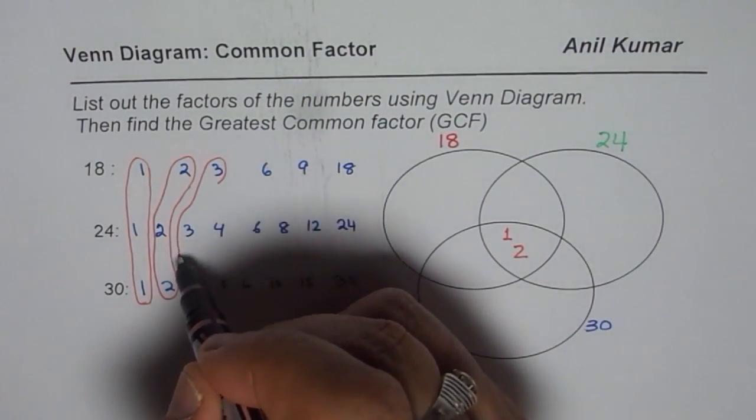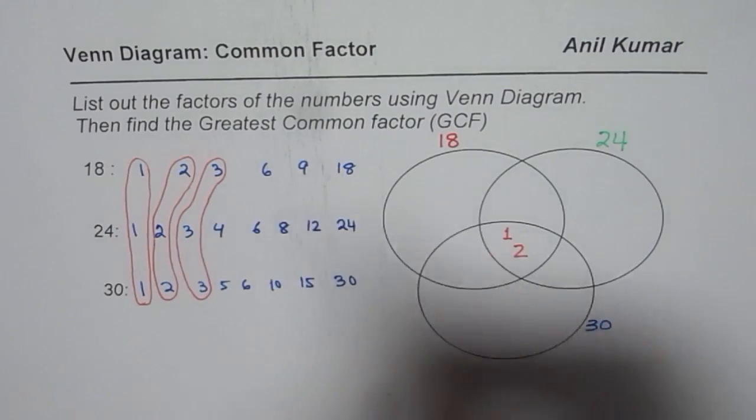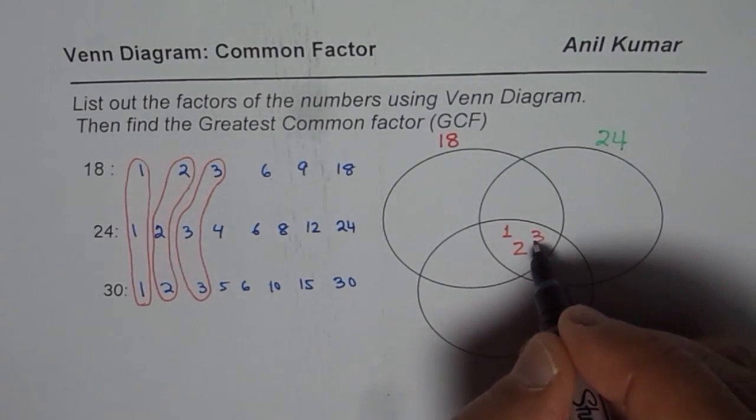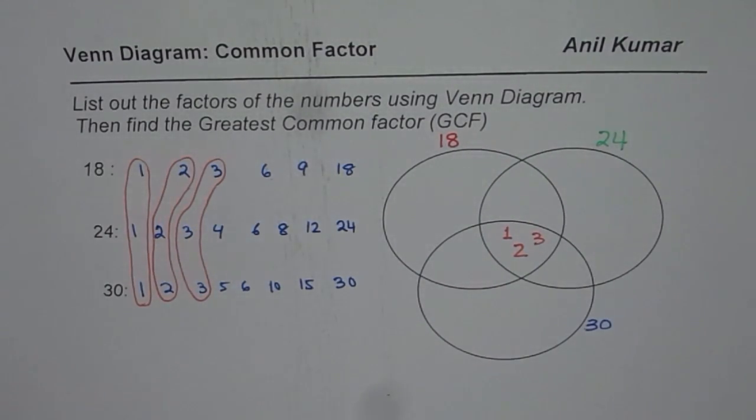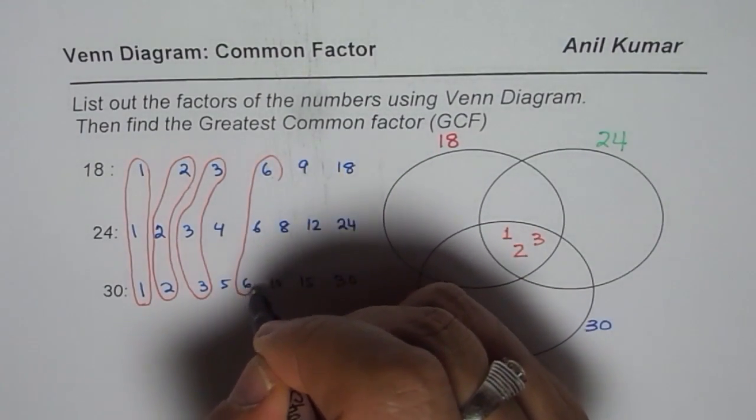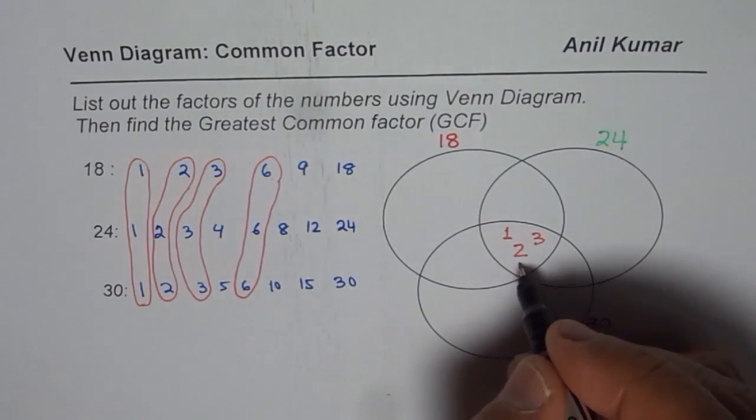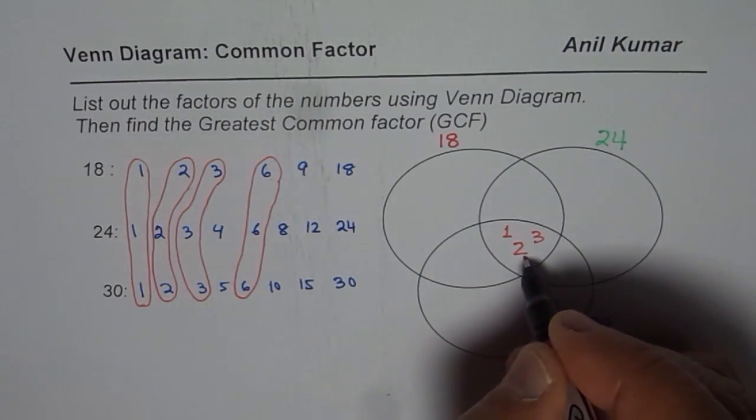3 is also common. Very good. So we have 3 also common. So 3 will also come here. Anything else? Well, 6 is also common. 6 is also common. So we will squeeze in 6 also here.